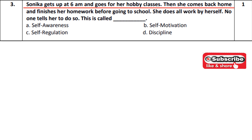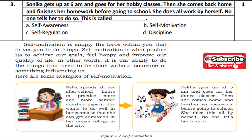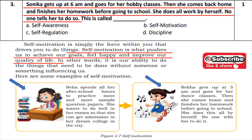Question 3: Sonika gets up at 6am and goes for her hobby class, then comes back home and finishes her homework. She doesn't tell anyone — her parents and friends are not telling her; she is self-motivated. She stays motivated to achieve her goals. Similarly, Neha is practicing sample papers to get good marks and gain admission to her dream college, and Rekha goes to dance class after finishing homework. This is the example of self-motivation. The answer is option B: self-motivation.